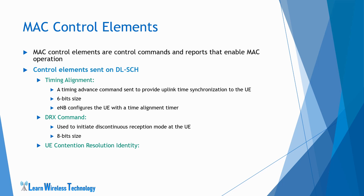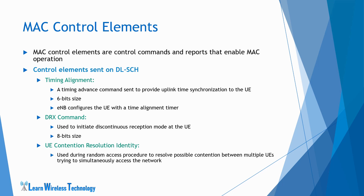The third DLSCH control element is UE Contention Resolution Identity. This is used during the random access procedure to resolve possible contention between multiple UEs trying to simultaneously access the network. UEs send their identities to the network on the common control channel during the RACH procedure, and if the MAC control element in the contention resolution message contains the UE identity that matches the one sent on the common control channel, that particular UE wins the contention resolution. The size of the UE contention resolution identity is 48 bits.